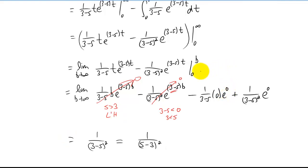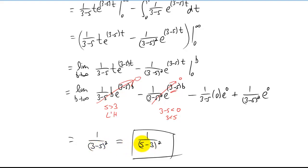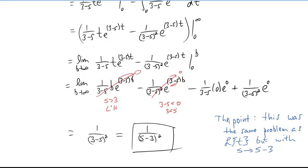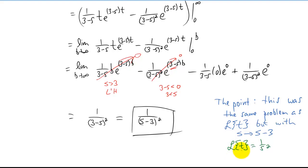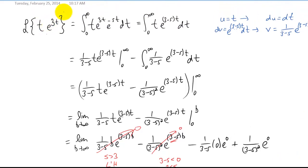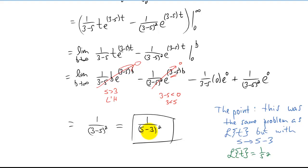The only term that doesn't go to zero is the last one, which looks like one over (three minus s) squared. I'm going to rewrite that as one over (s minus three) squared because it's a more standard way to write that term — we can do this because the term is squared, so the negative from flipping the two terms cancels. The point of all of this is to recognize that doing this entire integral was the same as the integral we'd have to do if we were finding the Laplace transform of just t. Remember, the Laplace transform of t is one over s squared.